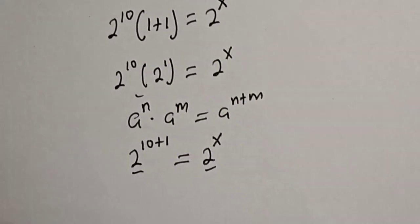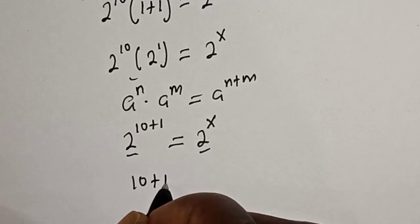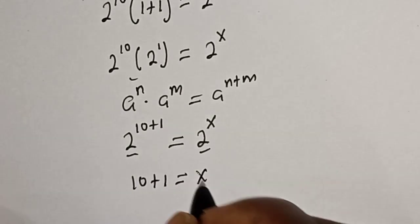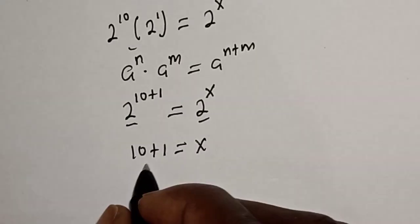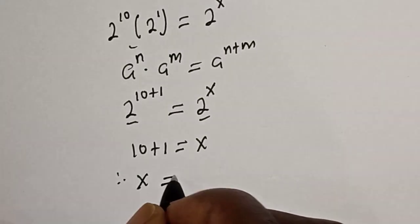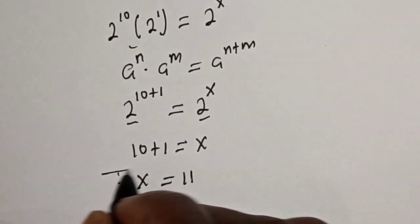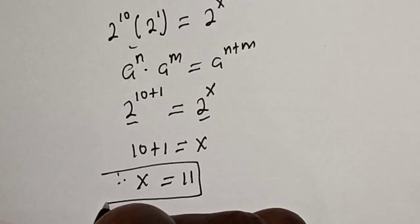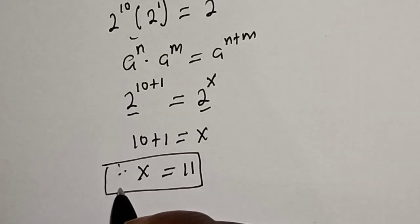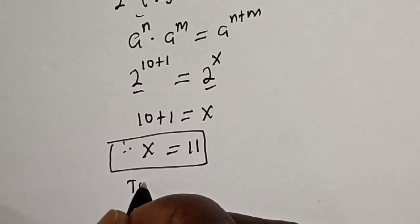So this is 10 plus 1 equals x, therefore x is equal to 11. This is the final answer. We can check to confirm if our answer is right or wrong.